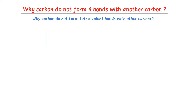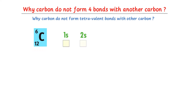The atomic number of carbon is 6. The electronic configuration of carbon is: 1s², 2s², 2px¹, and 2py¹ — with the 2pz orbital remaining empty. We know that 1s can accommodate only two electrons, and 2s can also accommodate two electrons. The remaining two electrons occupy 2px and 2py.